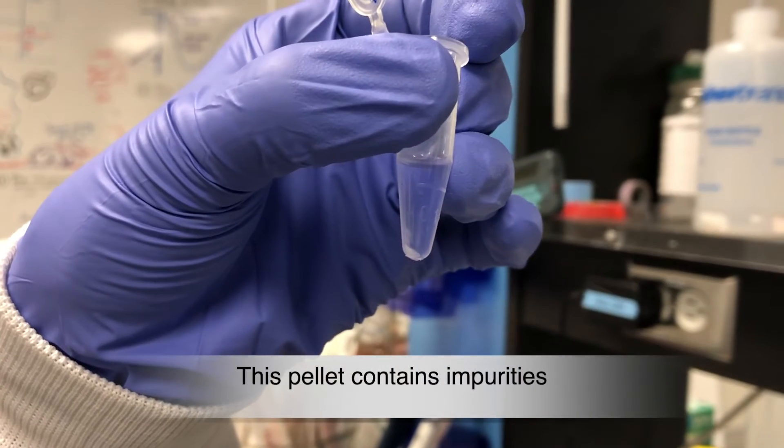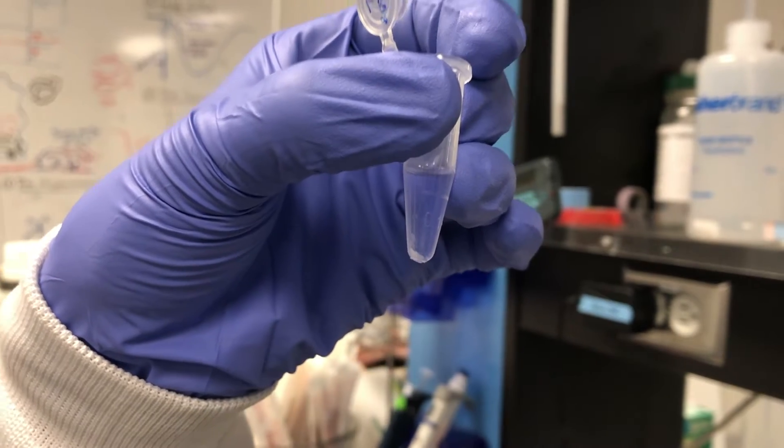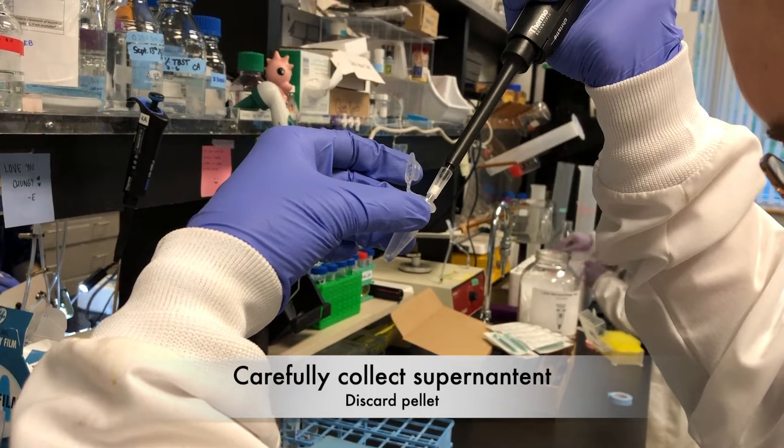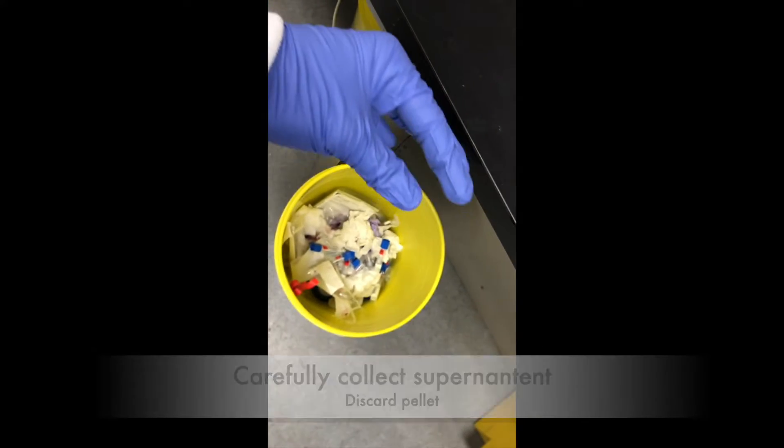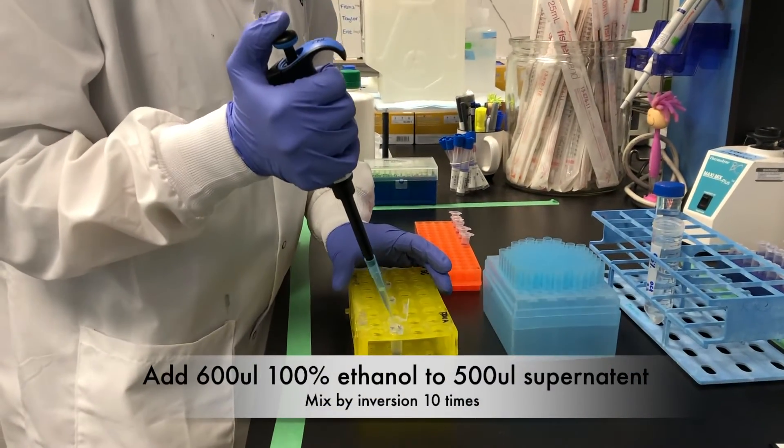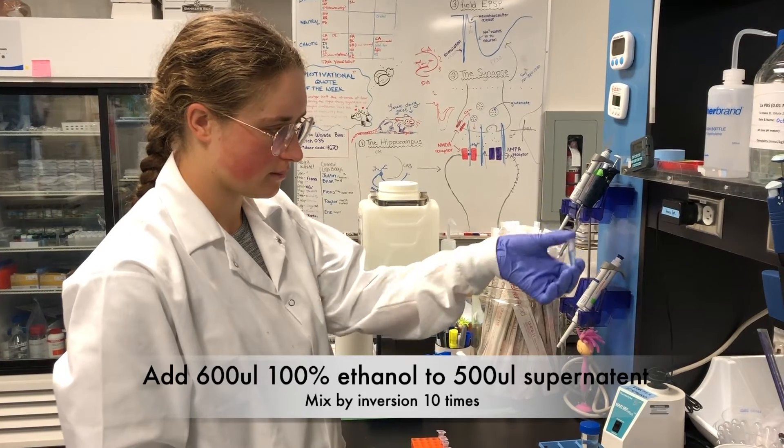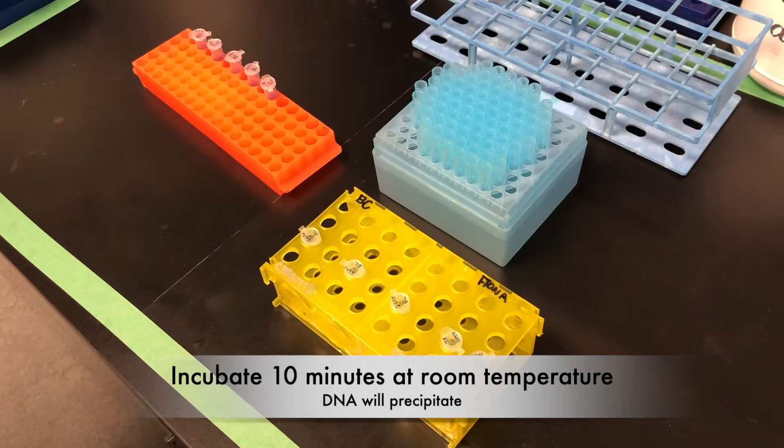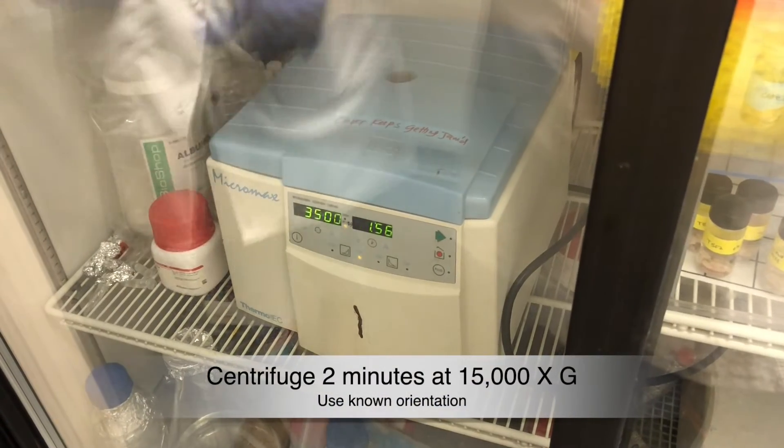The pellet containing impurities will be visible at this stage. Collect supernatant without disturbing the pellet. Discard the pellet. Add 600 µL 100% ethanol to 500 µL supernatant. Incubate 10 minutes at room temperature to allow DNA to precipitate, then centrifuge for 2 minutes.